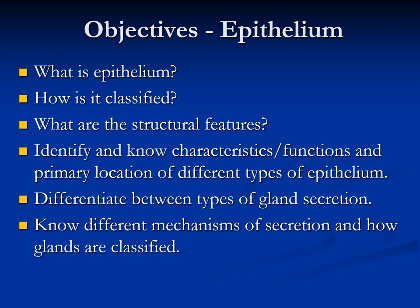We will start with the objectives for this lecture. We are going to talk about what is the definition of the epithelium, how we classify it, and what are the structural features of the epithelium — that is very important. At the end of this lecture, we will be able to identify and know the characteristics, function, and primary location of different types of epithelium. In the next lecture, we are going to talk about the glands and how we can differentiate between different types of glands depending on their type, their secretion, and how glands are classified.